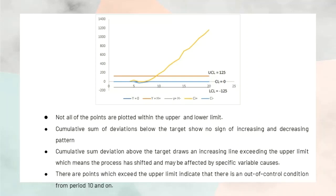It is shown that not all of the points are plotted within the upper and lower limit. Moreover, cumulative sum of deviation below the target shows no sign of increasing and decreasing pattern as the pattern should fluctuate randomly around the center line which is Y equal to 0.